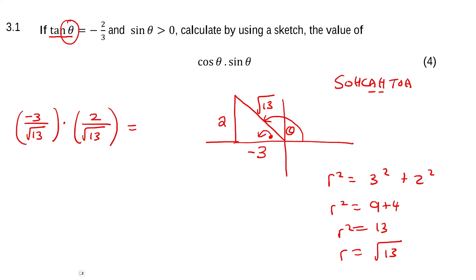And so multiplying top times top gives us minus 6. Bottom times bottom gives us 13. So that is your answer.